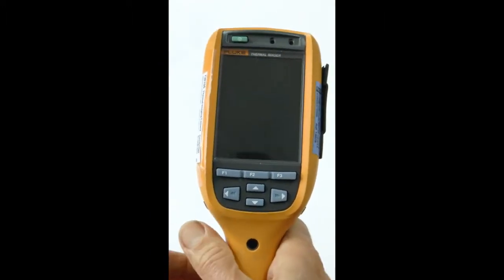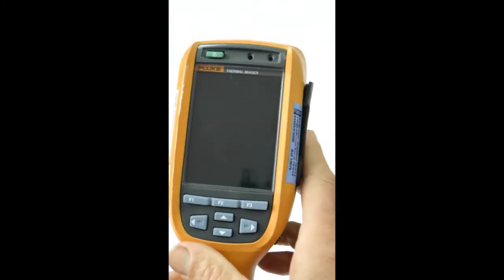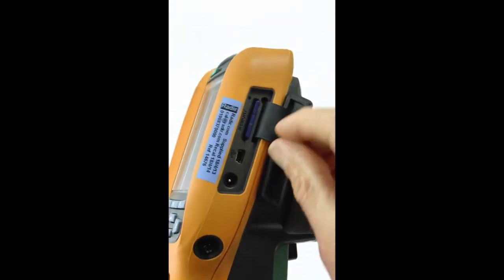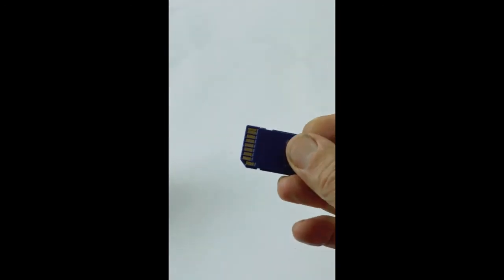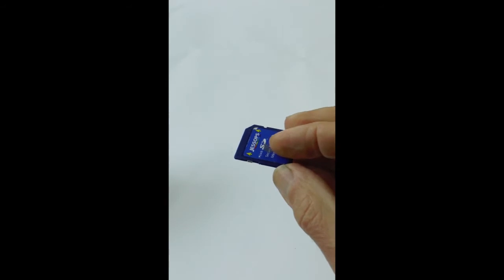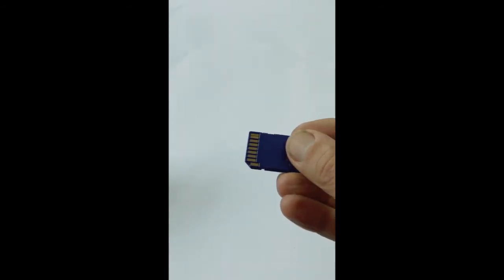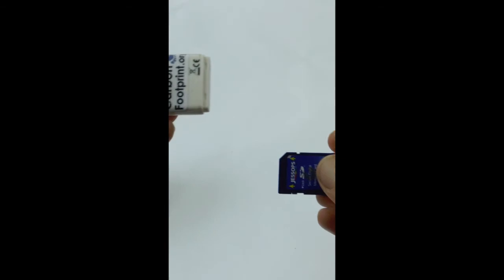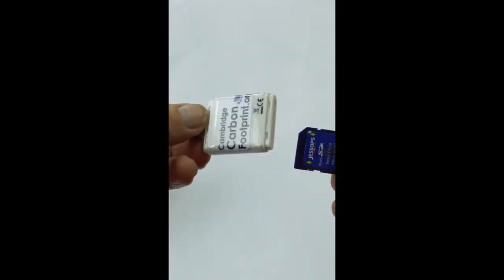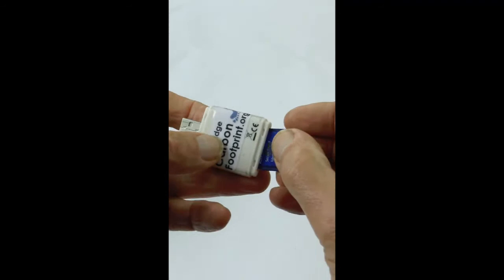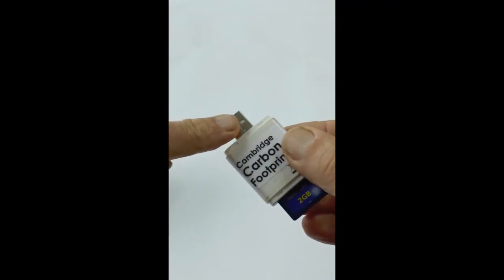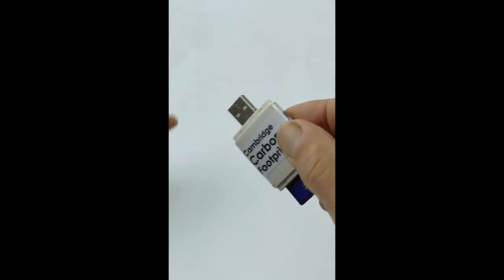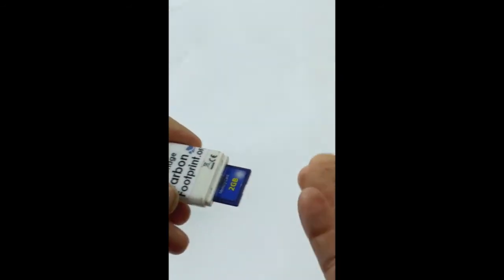When you want to get the saved images out of your camera you open this flap and eject the SD card. Your images are on there. If you don't have a slot for this on your PC or other device then in the camera bag you should find this adapter that will plug into your USB port. Then you can treat the images in a normal way.